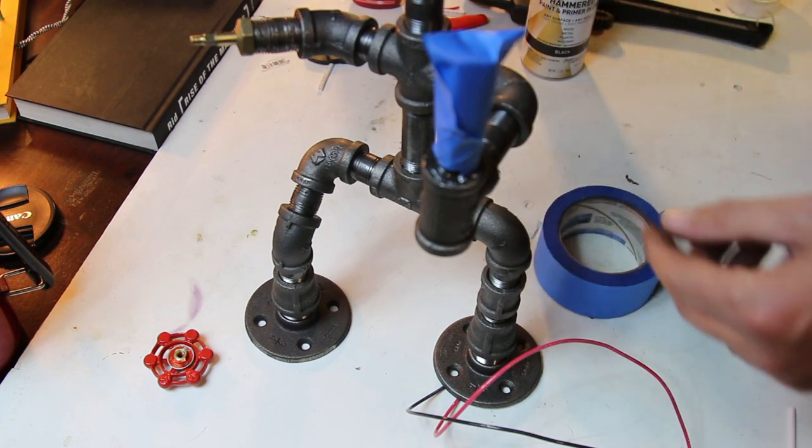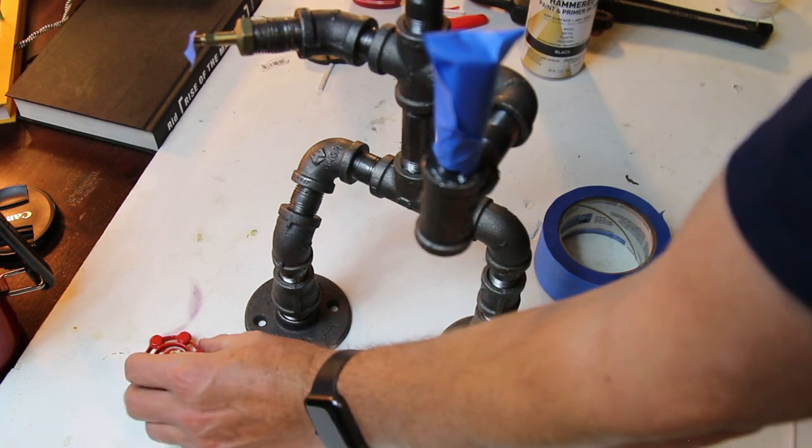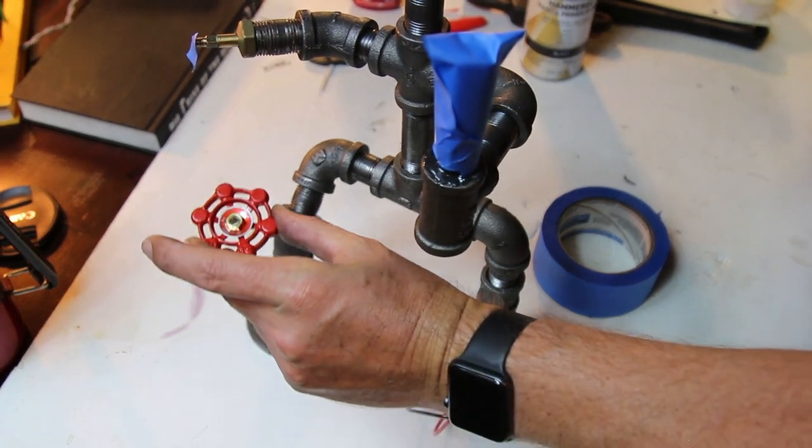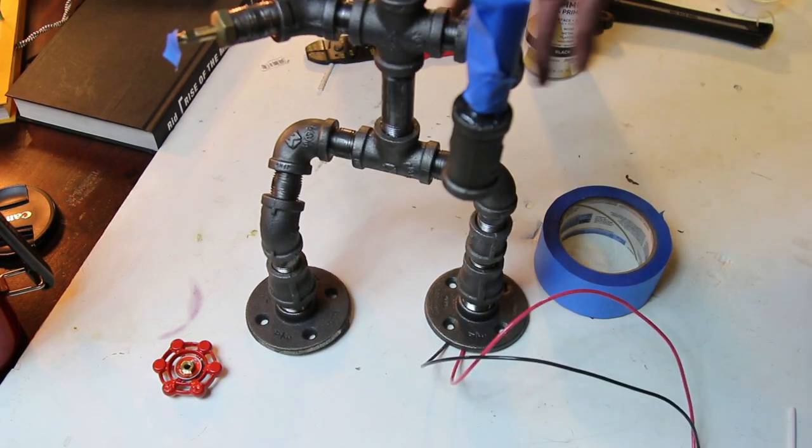And then you just take a little tiny tab right there on the end. That way the tip of the valve will stay that brass color so it'll match when you put this back on. And then we're just going to go ahead and we're going to spray paint this.